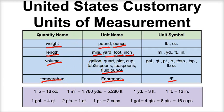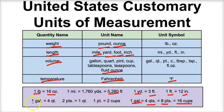The US customary system requires memorizing a bunch of different conversion factors. For example: one pound is 16 ounces, one mile is 1760 yards or 5280 feet, one yard is three feet, one foot is 12 inches, one gallon is four quarts which equals eight pints or 16 cups. In the metric system, all you have to do is memorize a series of prefixes and their order to make conversions.